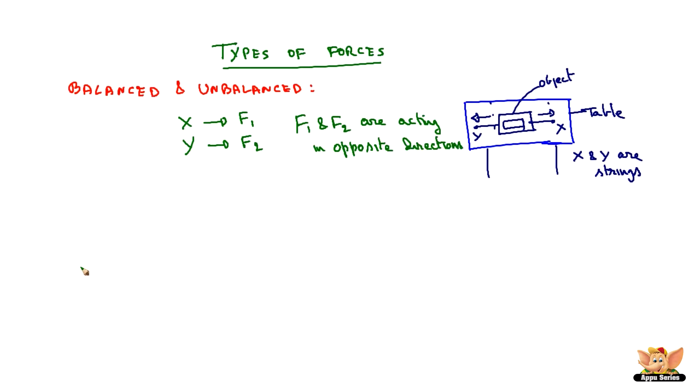In this scenario, if the F1 exerted by string X on the object and F2 exerted by string Y on the object are equal, then the body does not move. So if F1 is equal to F2, then the object which is placed on the table does not move.